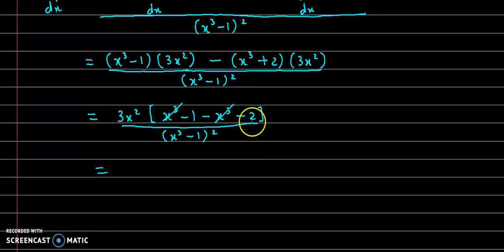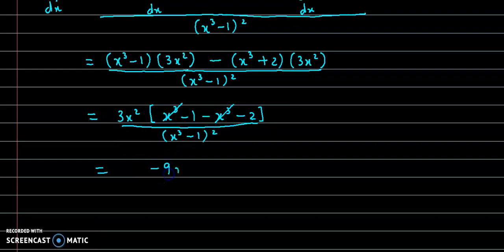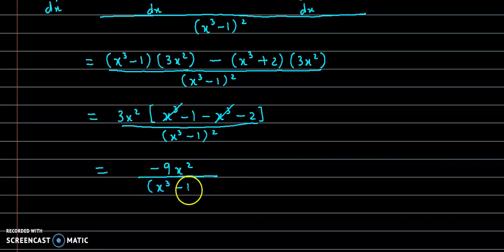Minus 3 into 3 gives minus 9x square, upon x cube minus 1 the whole square. So this is the value for dy by dx.